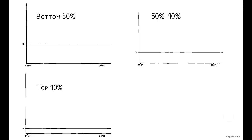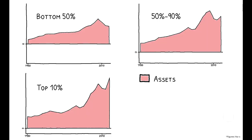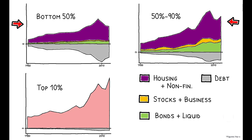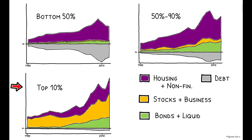Recall that wealth is calculated by summing the value of a household's assets and then subtracting its debt. These figures show what the composition of wealth looks like at different parts of the distribution. The bottom 90% is highly leveraged, meaning that their debt levels are high, and, breaking down the asset side, residential real estate is the primary piece — in other words, the largest component of wealth for this group is their house. The top 10%, on the other hand, looks very different: these households have low levels of debt and hold the bulk of their wealth in stock and business equity. These differences in portfolio composition are highly persistent.